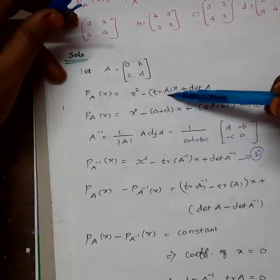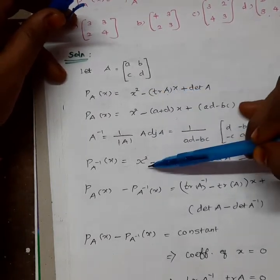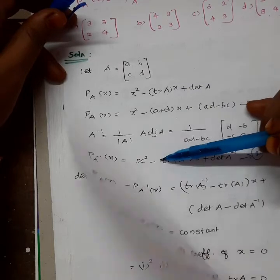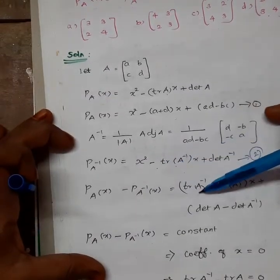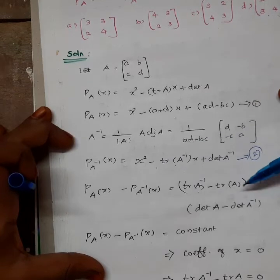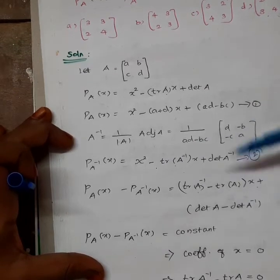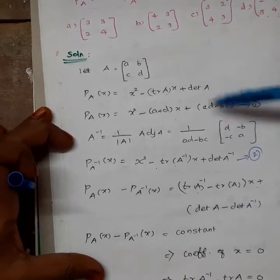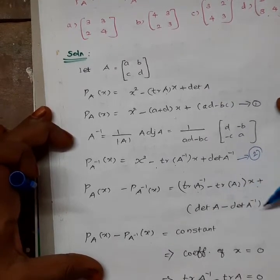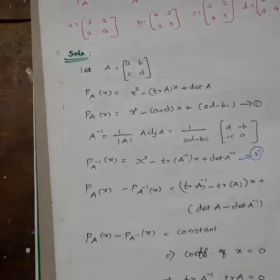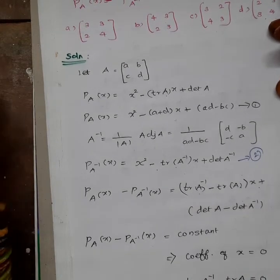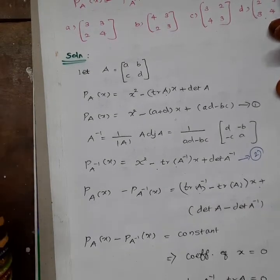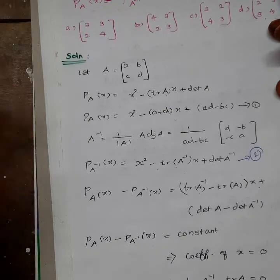We get minus trace of A, then plus, then minus, then an x term. So we have trace of A minus delta of A inverse. For this expression to be constant — meaning no x term — the coefficient of x must be zero, so x squared or x terms must vanish.